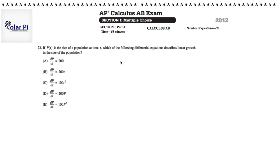Okay, so p of t is the size of a population at time t. And what we want is a differential equation, one of the answer choices, that describes linear growth. Pay attention, in the size of the population.